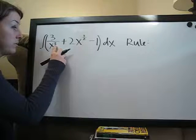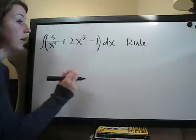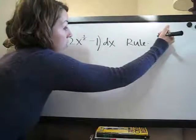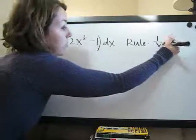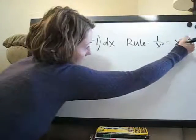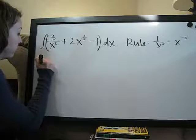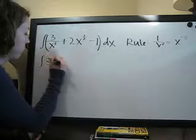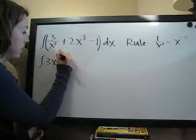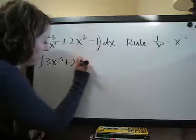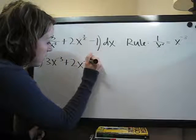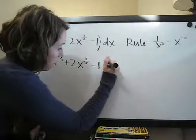So this is a positive 3. We would change it to a negative 3 to move it to the top. So we're going to say 1 over x to the third is the same as x to the negative 3. So I'm going to change this to be 3x to the negative 3 plus 2x to the 3 halves minus 1, dx.